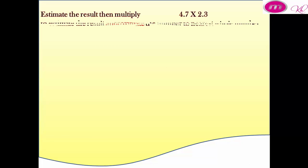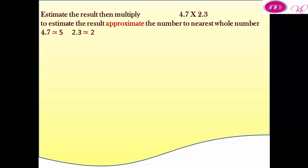Estimate the result, then multiply 4.7 by 2.3. To estimate the result, we must approximate each number to the nearest whole number: 4.7 approximates to 5, and 2.3 approximates to 2. That means the result will be close to 10, since 5 by 2 equals 10.